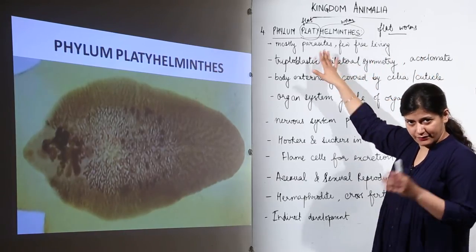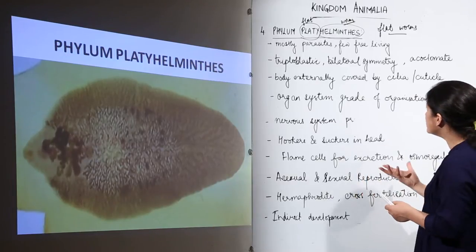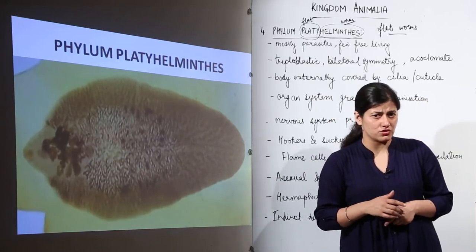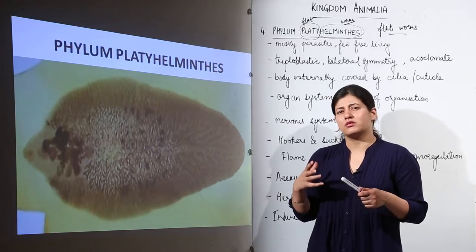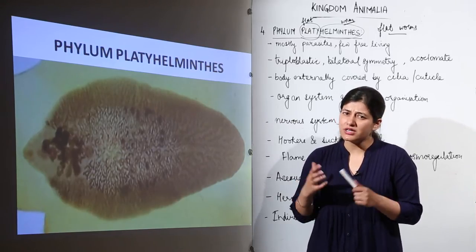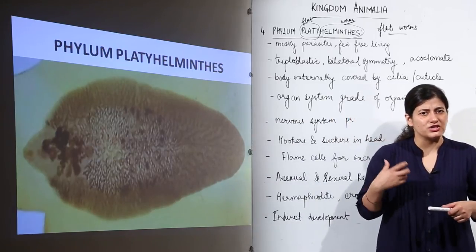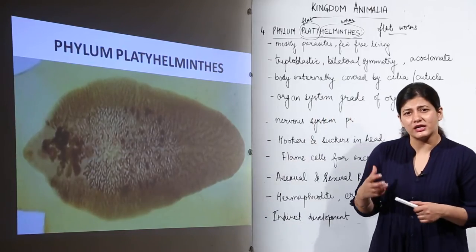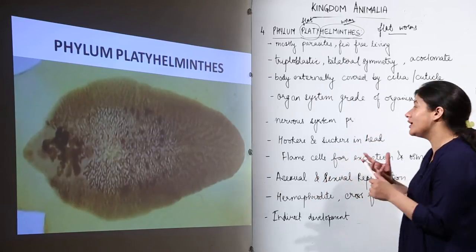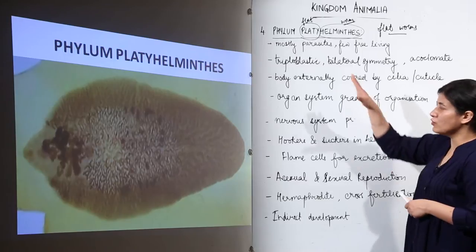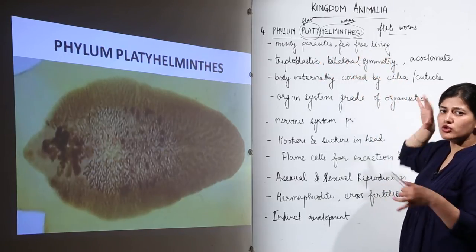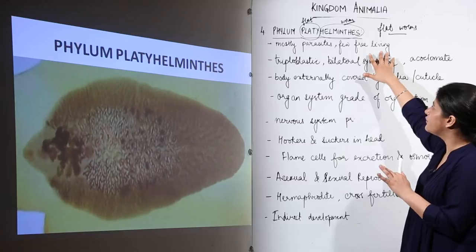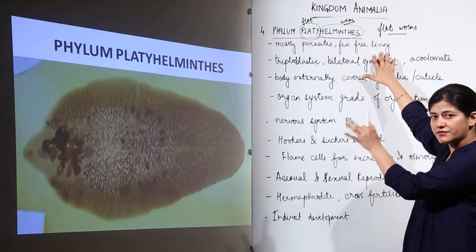Platyhelminthes are mostly parasitic on other animals. In humans, many platyhelminths are parasitic. For example, Schistosoma is a very prominent and widely found organism that infects the human body, causing dysentery and as many as 25,000 deaths. These worms are of great economic importance. Those which are free-living are mostly aquatic, and the rest are mostly parasitic.